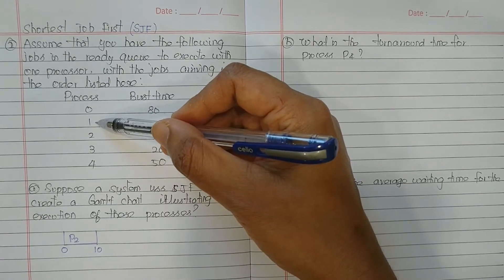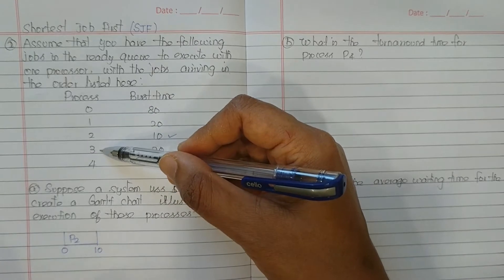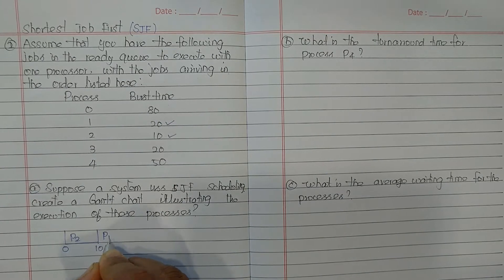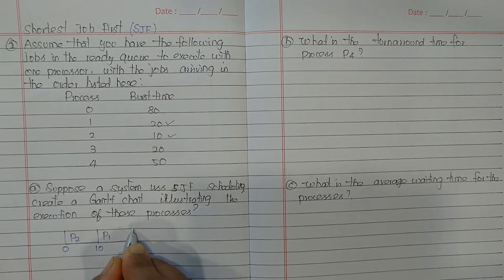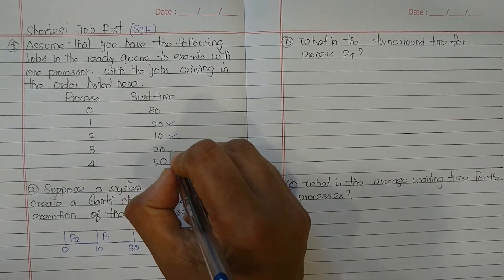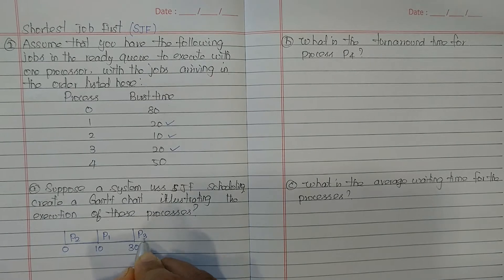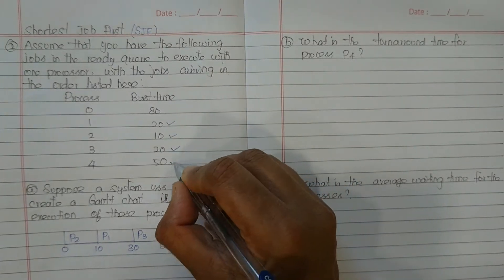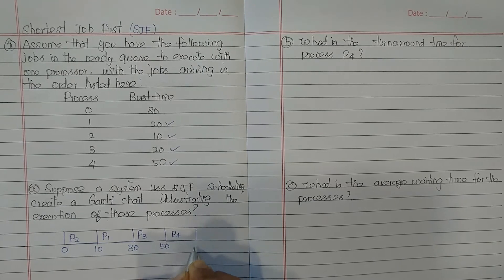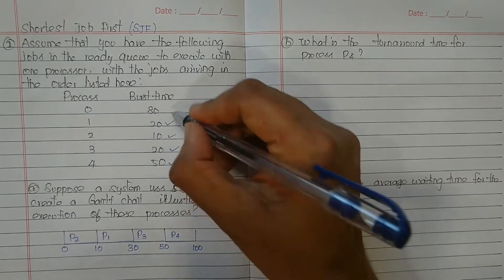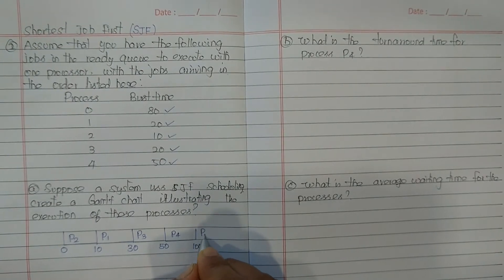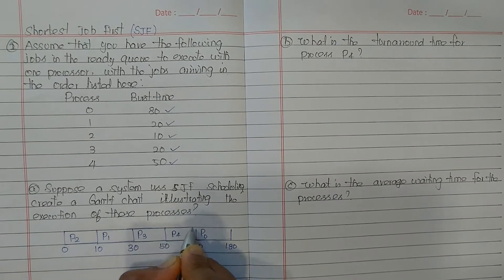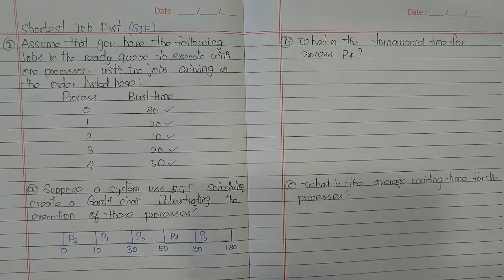The order is: P0 first, P1 next, P2 next, P3 next, and P4 last. So we choose P1. At time 10, P1 starts execution, needs 20 milliseconds, and finishes at time 30. Then P3 also needs 20 milliseconds and finishes at time 50. After that, P4 starts and finishes at time 100. Finally, P0 finishes at 180 milliseconds. This is the Gantt chart showing the execution order.